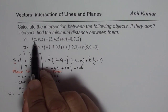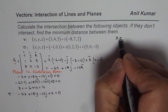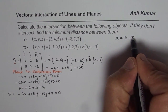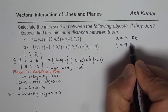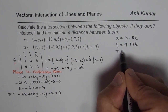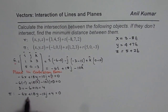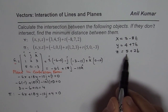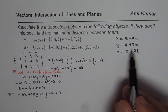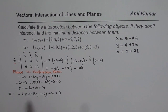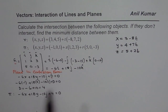For the line, we write the parametric values: x = 3 - 8t, y = 4 + 7t, z = 5 + 2t. These x, y, z values will now be substituted into the plane equation to find the value of t, and then the intersection point.